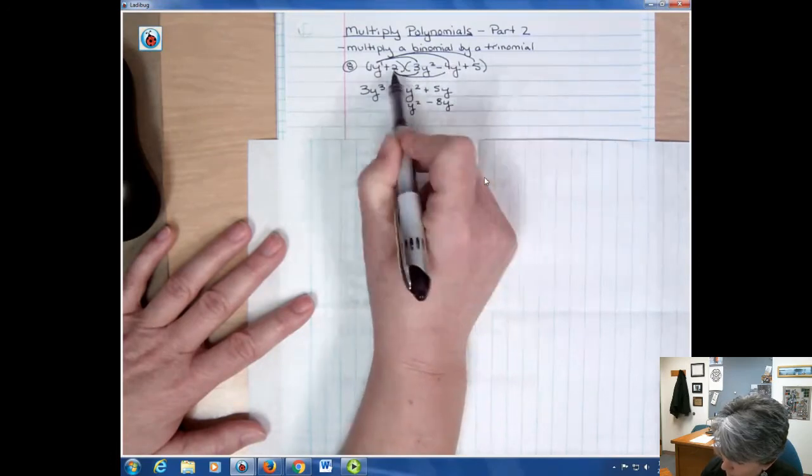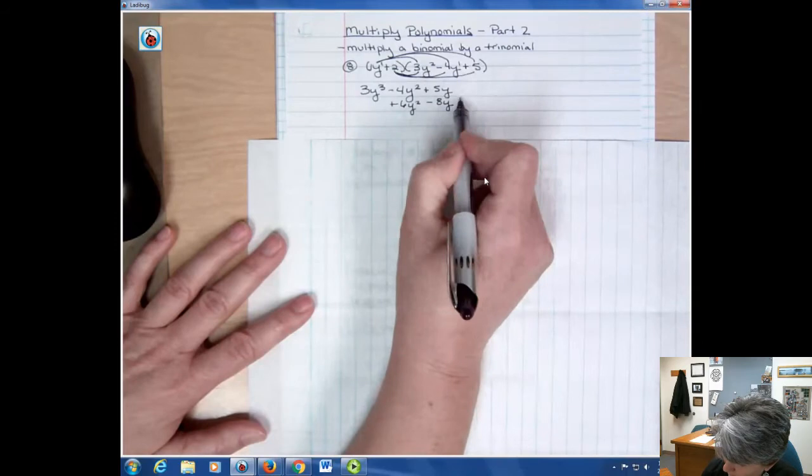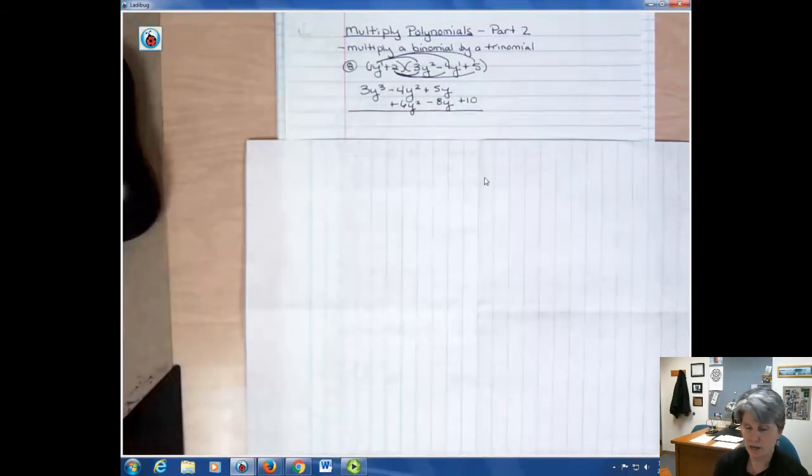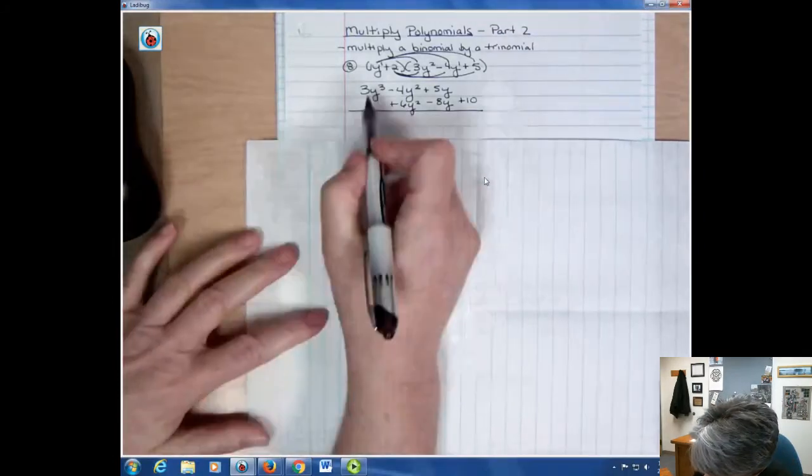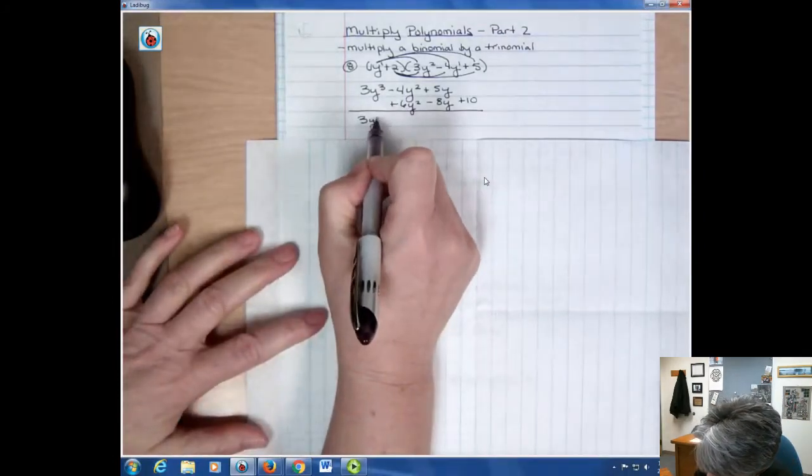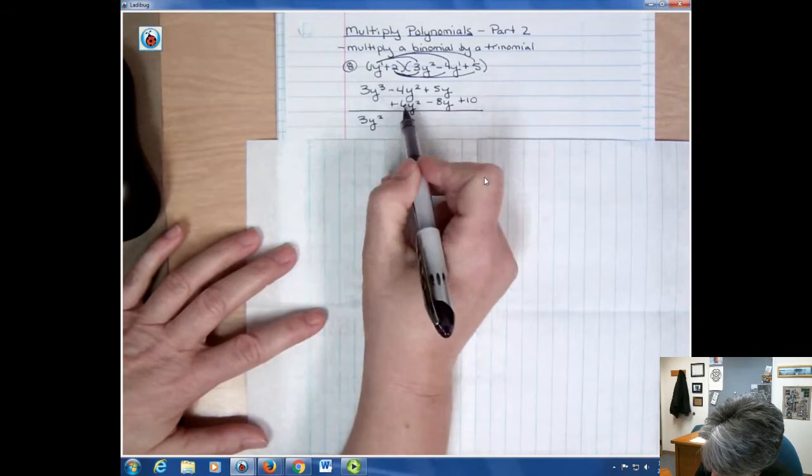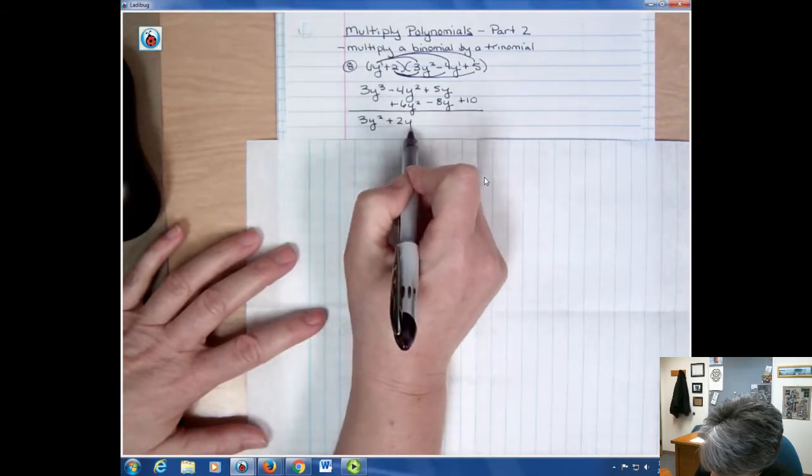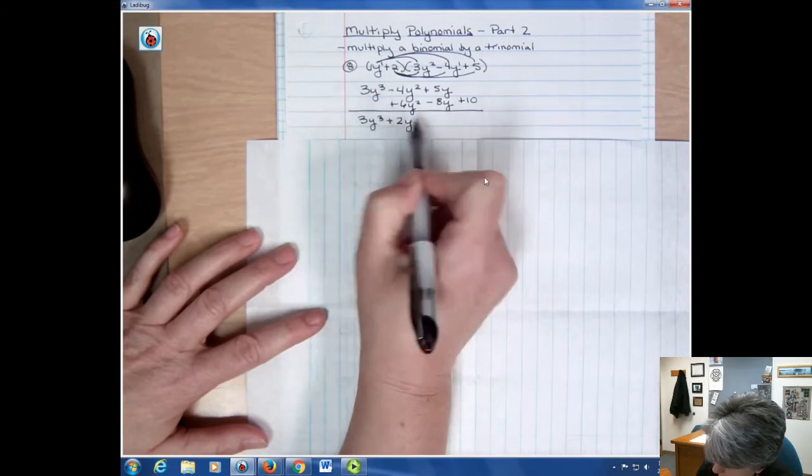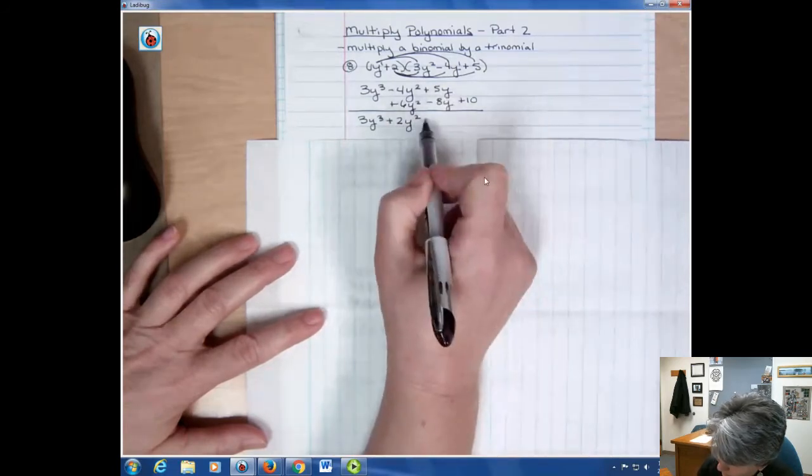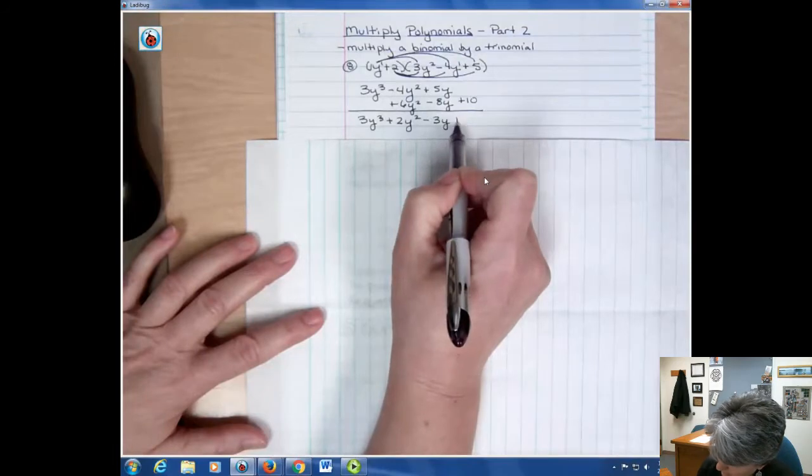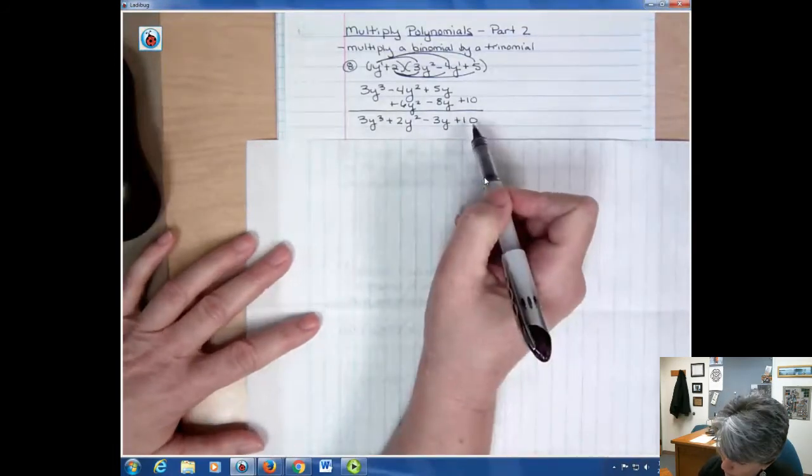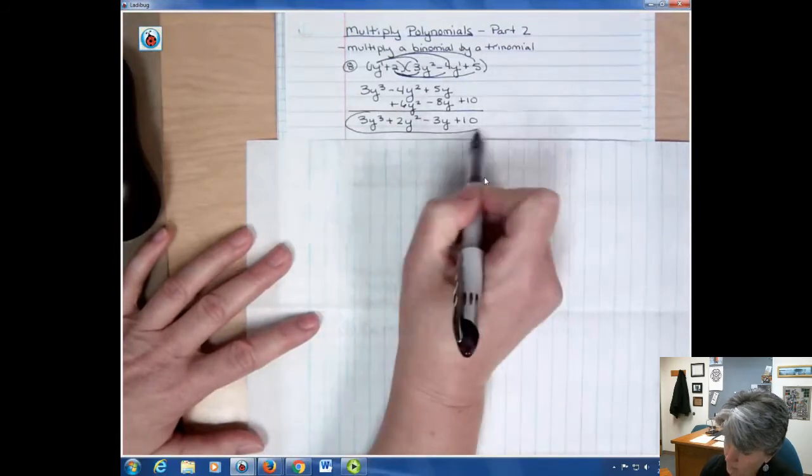And then I have 2 times 5, which is plus 10. Then because I have those all lined up and ready to go, I can just add straight down, and I would get 3y cubed. And I have positive 6 and negative 4, so positive 2 y squared. 5y minus 8y negative 3y plus 10. And these are all different degrees, so I can't combine anything. That's just it. I'm done.